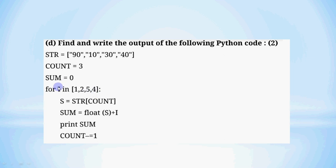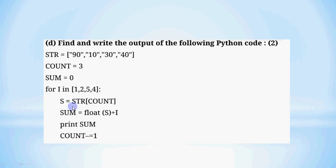In Python loops, after the colon, whatever is indented will repeat. So these 4 indented lines repeat for each value of i. We will do this with detailed working, because in the exam you will also need to show the proper working.